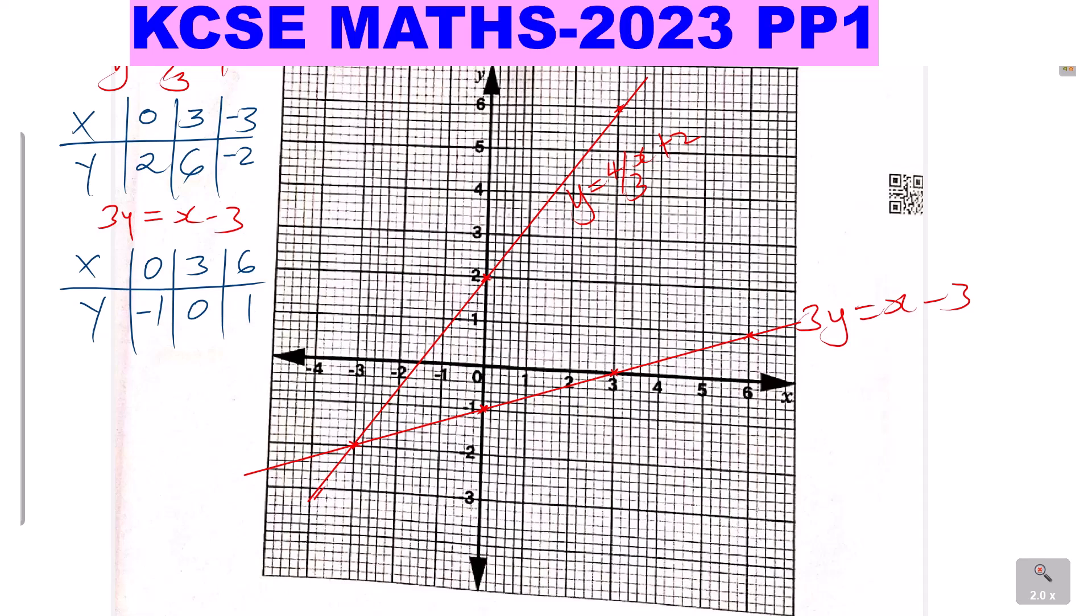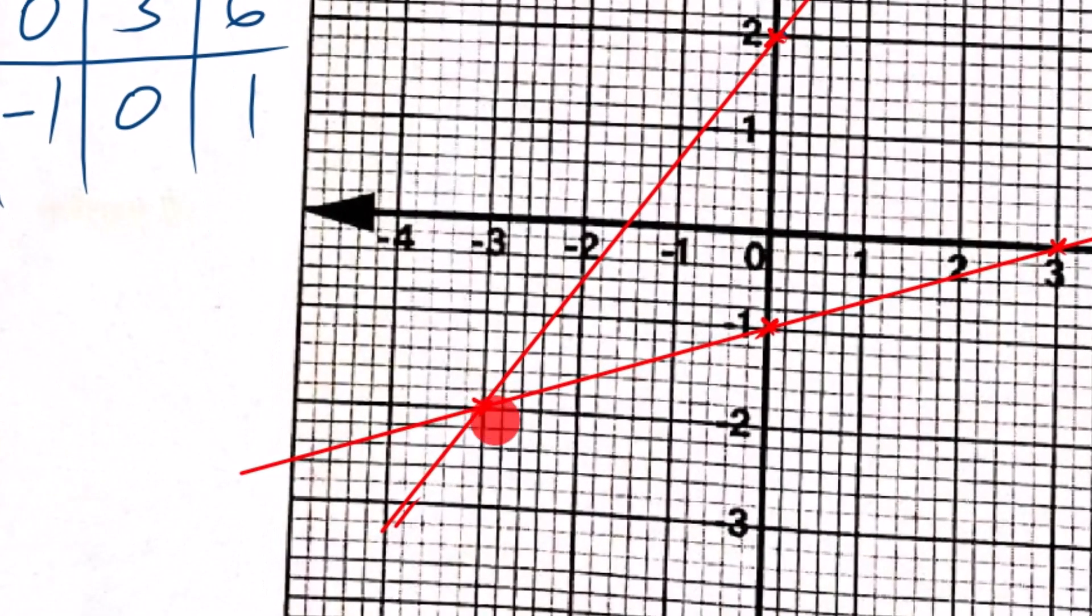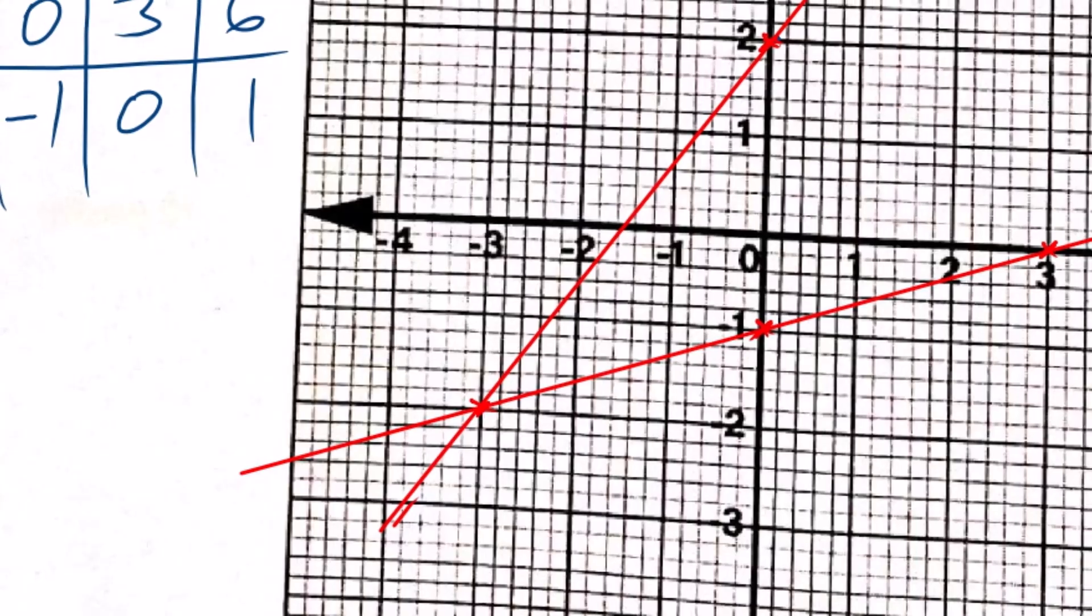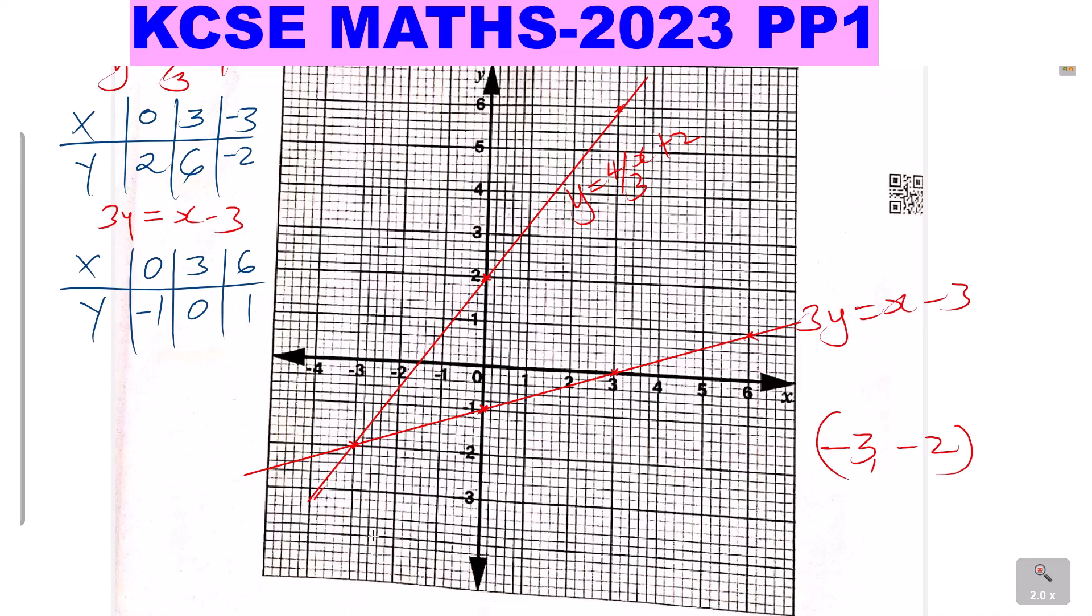Now to solve the simultaneous equations, check the point of intersection of the two straight lines. And this is the point, this is the point where the two lines are meeting. And this will be the solution. So give the coordinates of this point. And these are negative 3, negative 2. So negative 3, negative 2. So in this case, x is therefore negative 3, and y is negative 2. So these are the solutions. That is how you solve simultaneous equations graphically, by simply drawing the lines and getting the point of intersection. The coordinates of the point of intersection gives the solution.